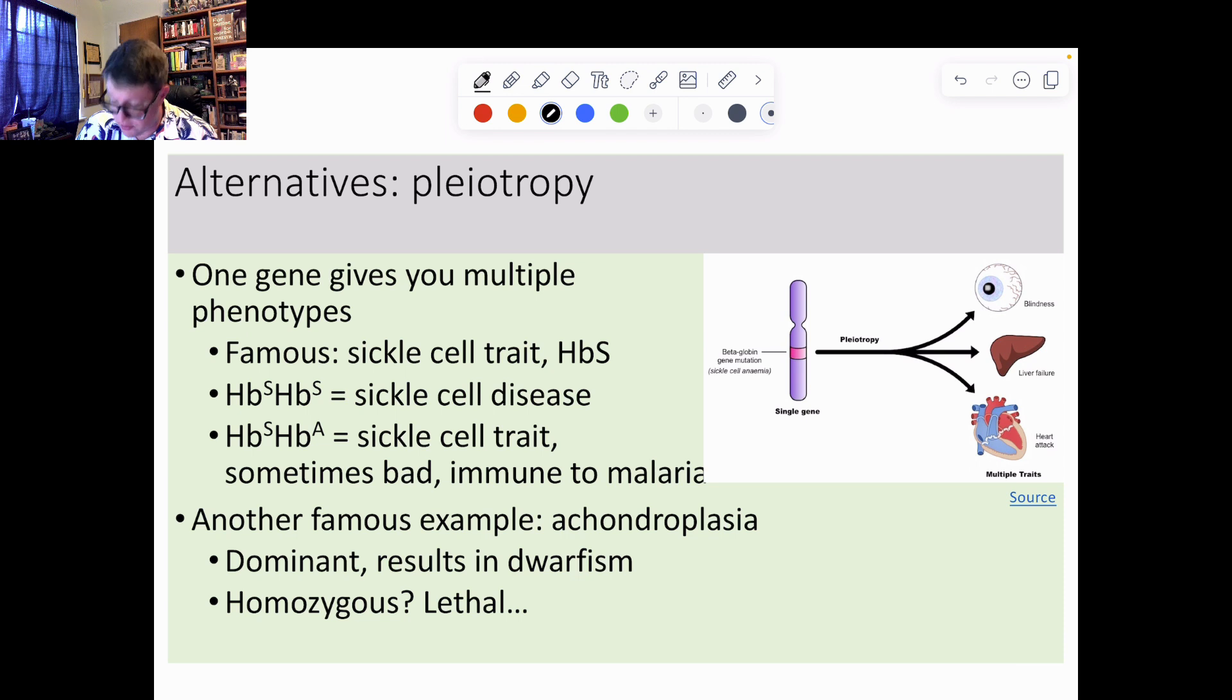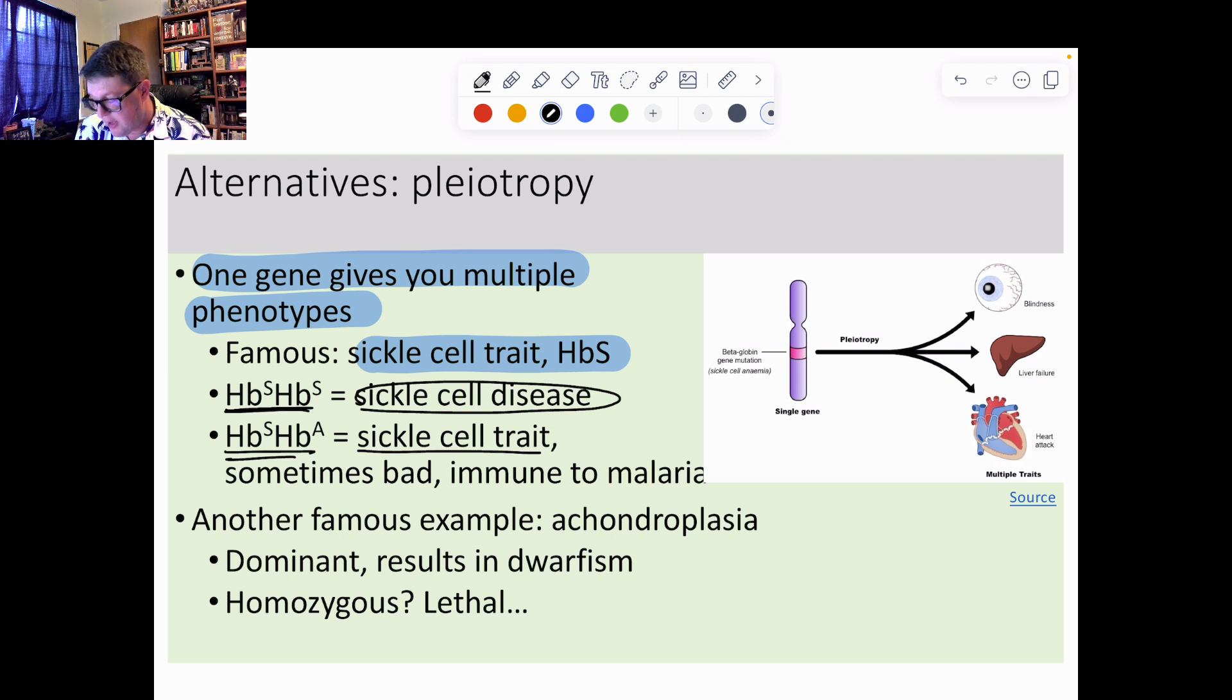Another example of that is what we call pleiotropy. Pleiotropy is when one gene is going to give you multiple phenotypes. The most famous example of this most likely is sickle cell trait. Sickle cell trait has to do with hemoglobin, and hemoglobin comes in a few varieties: we have adult hemoglobin, fetal hemoglobin, and abnormal hemoglobin. If you have two copies of the abnormal hemoglobin, what this results in is sickle cell disease. If I have one copy, you get what's known as sickle cell trait, which sometimes is bad, but it also prevents you from getting malaria, which is good. You're kind of normal but kind of not normal, and you're immune to malaria. We're getting multiple things that result from this one gene.